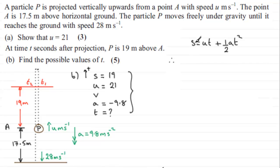equals U times T, so that's going to be 21 times T, 21T. And then we've got plus a half times acceleration, which is minus 9.8, and that's multiplied by T squared. So you can see we're getting this quadratic equation because you've got T squared in here.